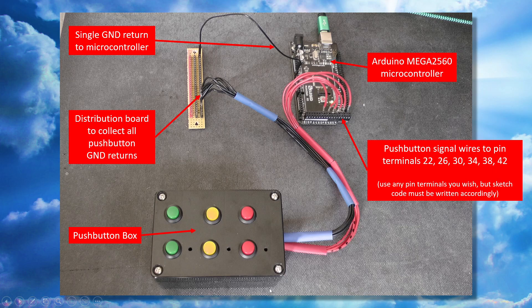On the other side of all the push buttons we have our signal wires, and for this particular project I'm taking them back to pin terminals 22, 26, 30, 34, 38, and 42. If you want to do something like this you can use any of these pin terminals — it doesn't matter which — as long as the sketch code written for it actually matches up with those pin numbers you're using physically.